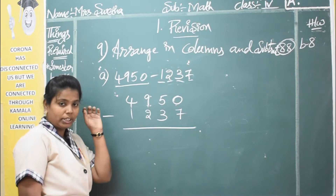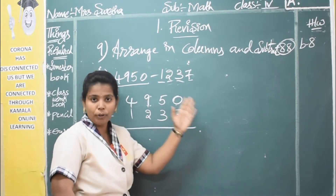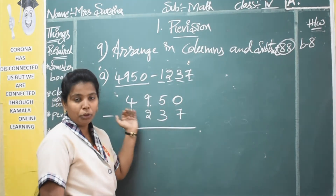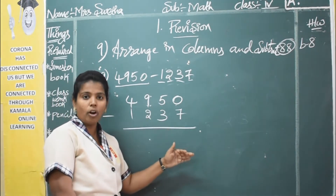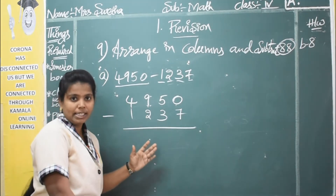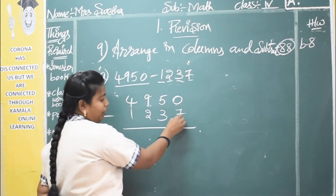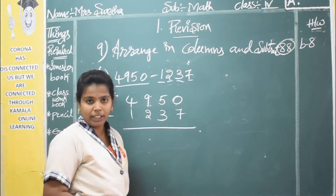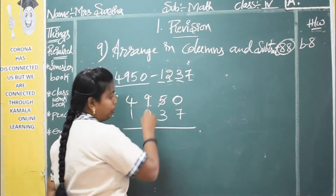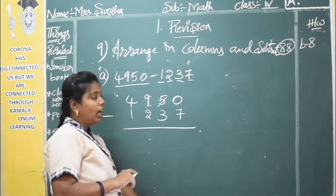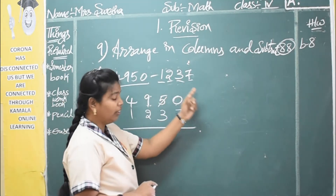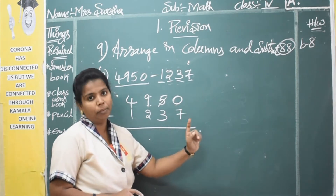Now you have to subtract. Always on top you have to have the bigger number. When you don't have a bigger digit on top, you have to take a borrow. I think you already know this — you have done many addition and subtraction problems before. Here you have zero and from zero you have to subtract seven — you cannot do it. So in that case you have to take a borrow from the next digit.